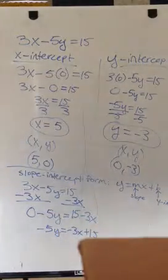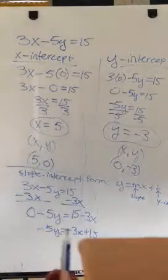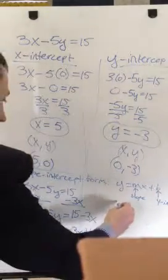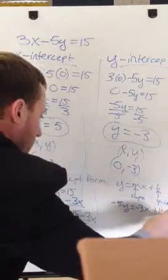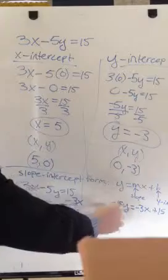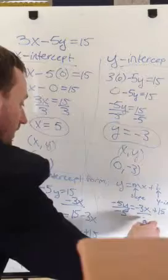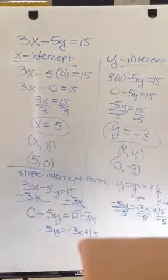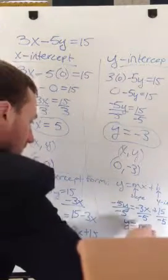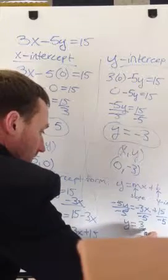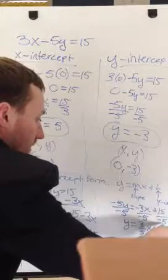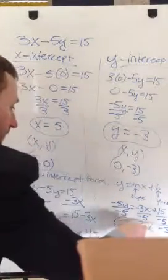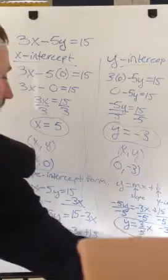Negative 5 is multiplying y, and I want y by itself. To get y by itself, I'm going to divide by negative 5 on both sides. With division, I have to divide each term by negative 5. I'm left with y equals — negative 3 divided by negative 5 is positive 3 fifths, still times x — plus 15 divided by negative 5, which is negative 3. Plus negative 3 is just minus 3. Now I have an equation in the correct form: y equals 3 fifths x minus 3.